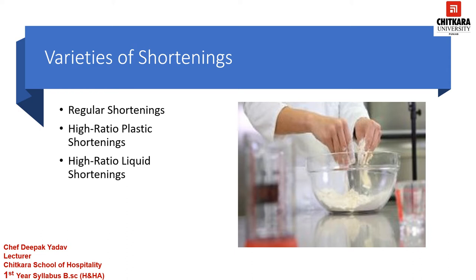Now we have high ratio liquid shortening. High ratio liquid shortening, also called liquid cake shortening, are less hydrogenated than plastic shortening. So they are liquid and pourable. They are thick and cloudy in appearance.